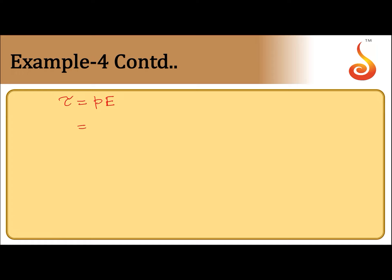P is 6 into 10 to the power minus 30. E is 1.5 into 10 to the power 4.